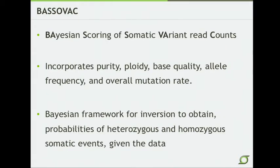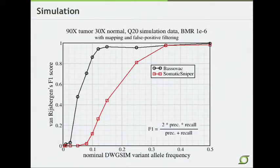That spurred us to develop an algorithm called BASIVAC — Bayesian Scoring of Somatic Variant Read Counts. It incorporates purity, ploidy, base quality, and a host of other factors into a more complex model. We pull these all together into a Bayesian framework and then obtain the probabilities that a particular single nucleotide variant is either heterozygous or homozygous given the input data. We've tested this against other algorithms, and even in difficult environments, it's pushing our curve of varying allele frequency far to the left compared to Somatic Sniper and first-generation callers.